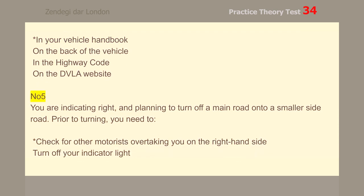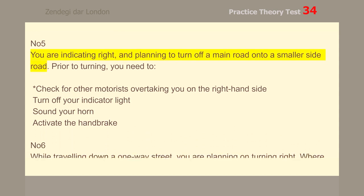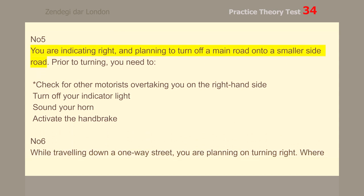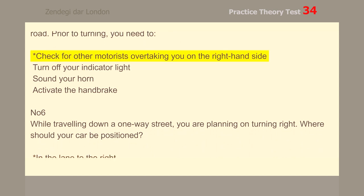Number 5. You are indicating right and planning to turn off a main road onto a smaller side road. Prior to turning, you need to check for other motorists overtaking you on the right-hand side.